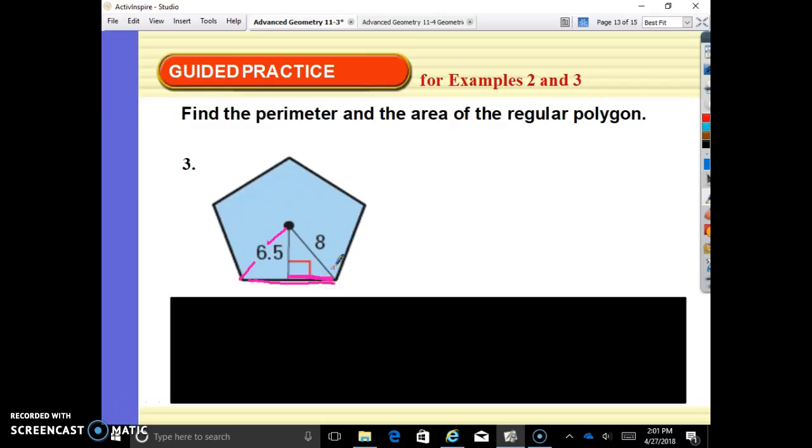We can use Pythagorean theorem on this one. So 8 squared minus 6.5 squared equals square root and we get 4.66. We're going to leave that in our calculator because a squared plus b squared equals c squared. Leave that in your calculator times 2 equals, and that is the whole base right here of 9.3 times 5 equal bases. So times 5 and we get that the perimeter is approximately 46.64.